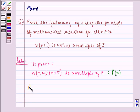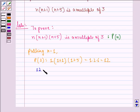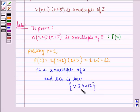Now putting n equal to 1, P(1) becomes 1(1+1)(1+5) equals 1·2·6, that is equal to 12. We see that 12 is a multiple of 3 and this is true because 3·4 equals 12 and this makes 12 a multiple of 3.